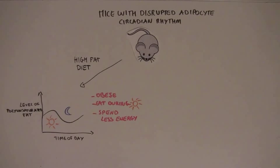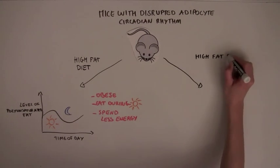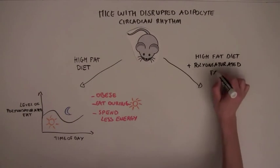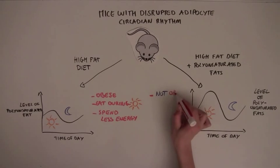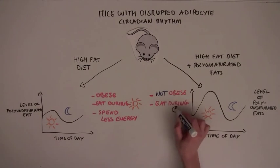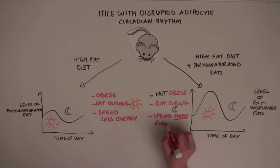In fact, when the scientists fed mice that had a disrupted adipocyte circadian rhythm a high-fat diet supplemented with polyunsaturated fats, the mice did not become obese, and they ate at a normal time at night, and they had normal energy expenditure.